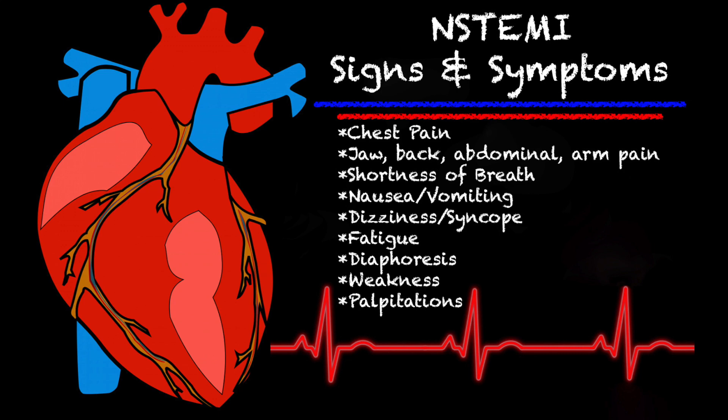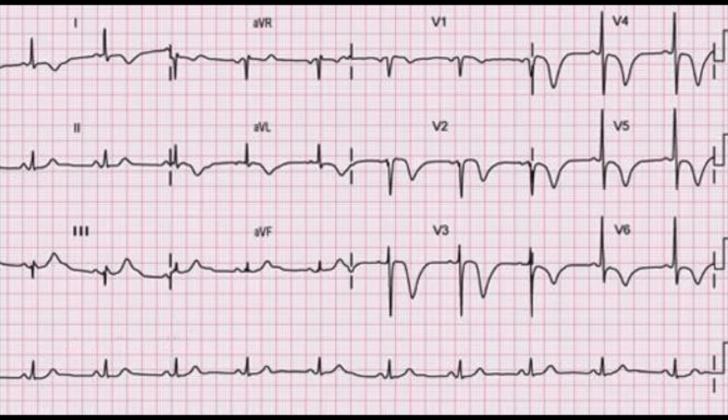Let's take a quick look at some of the changes you may see, if any, on an NSTEMI EKG. Just taking a quick glance at this, we're seeing obvious T-wave inversion in V1, V2, V3, V4, V5, V6, and also in lead I and AVL — so we are seeing a lot of T-wave inversion. In other EKGs, you may see very slight T-wave inversion and very slight ST depression, which is why it's so hard to identify.